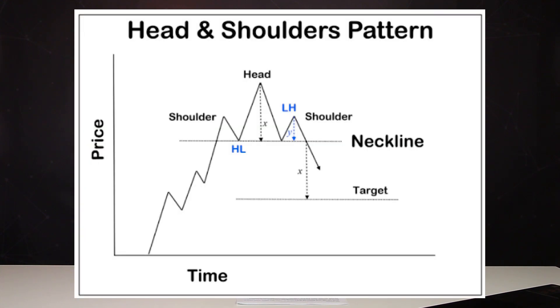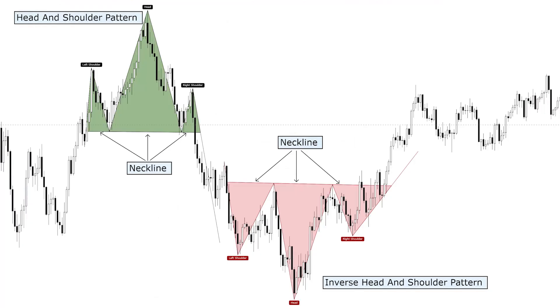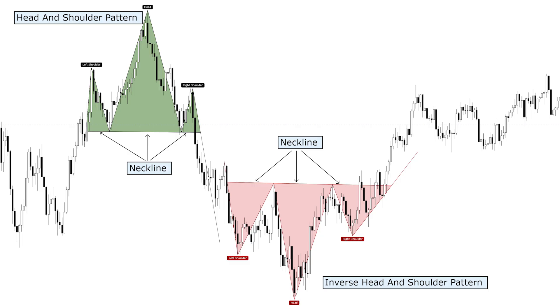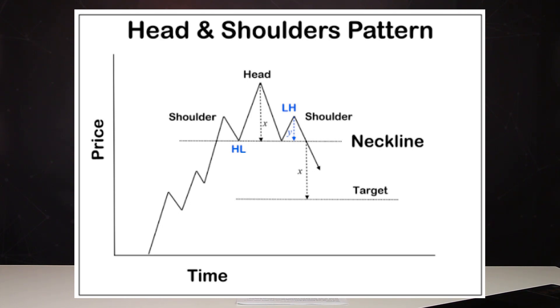And now the true classic of the reversals — head and shoulders. This is probably the most famous figure in technical analysis in the world. It consists of three peaks where the average is above all — accordingly two shoulders and one head. The neckline connects the two minimum values of the extreme vertices. As a rule, the neckline should be tilted towards the upcoming trend reversal, so the figure is considered better working. Entrance is done on the third peak or on the breakdown of the neckline.